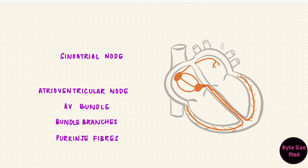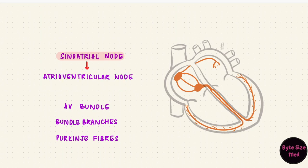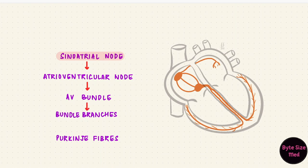To recap: the impulse starts at the sinoatrial node, spreads through the atrial contractile cells, gets conducted to the atrioventricular node, then enters the atrioventricular bundle, travels down the right and left bundle branches, and passes through the Purkinje fibers to reach the ventricles.